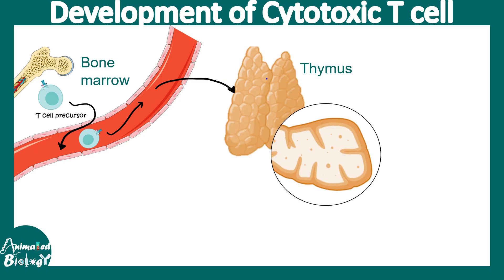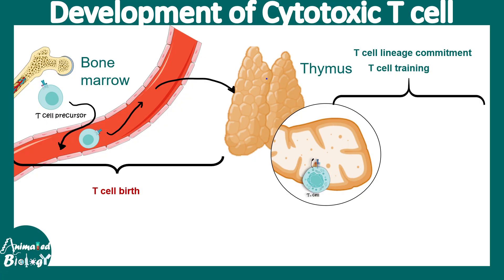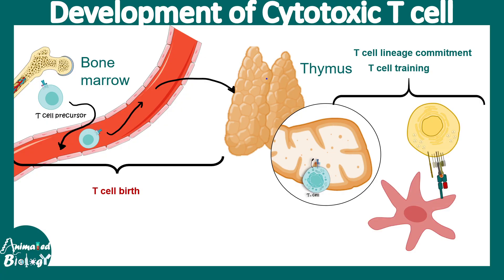The thymus is like a training school for T cells, with several teachers instructing precursor T cells on important life lessons. If these precursor T cells learn to recognize class 1 MHC-bound peptides, they stop expressing the CD4 co-receptor and start expressing the CD8 co-receptor, becoming CD8 positive cytotoxic T cells.